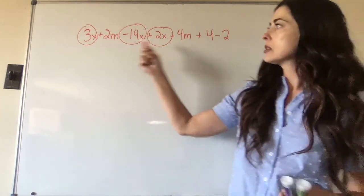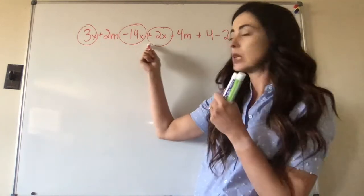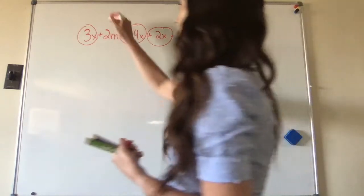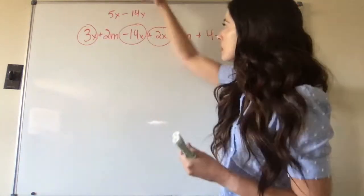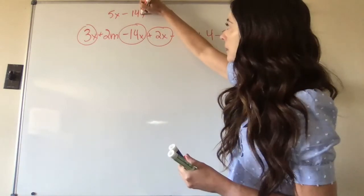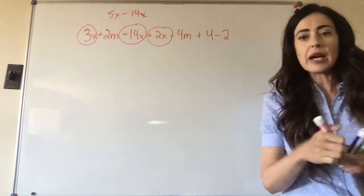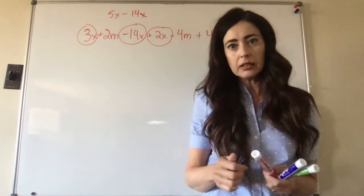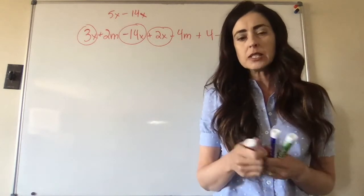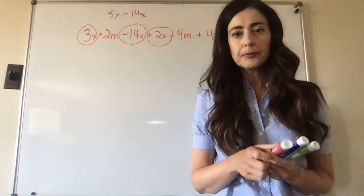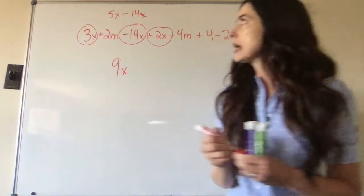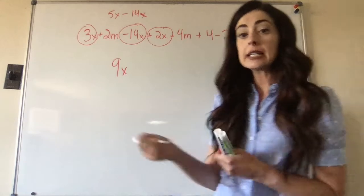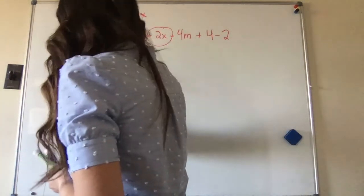We have 3x minus 14x plus 2x. So I'm going to do the easier ones first. There's 3x plus 2x is 5x. So then we have 5x minus 14x. All right, 5x minus 14x, the signs are different. Find the difference. What's the difference between 5 and 14? It's 9. So we're left with 9x's. And then is it going to be positive or negative? It's going to be negative because the 14 is larger.